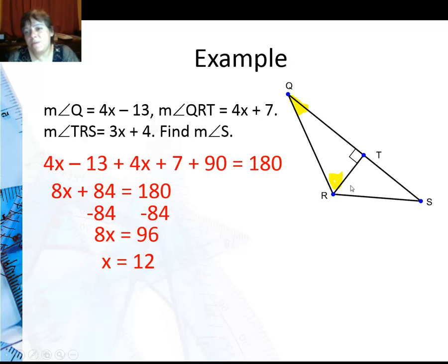Now the thing I'm looking for is angle S. If I go back, I can put 12 back into any of these values. But this angle, TRS, is complementary to angle S because that's another right angle where RTS is. Let me mark that for you.